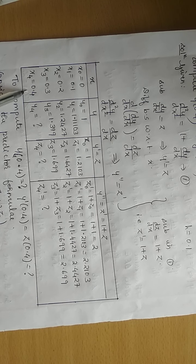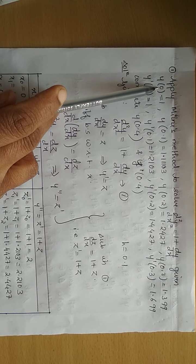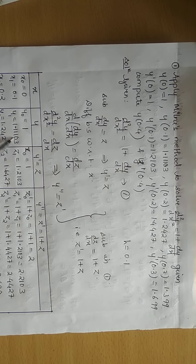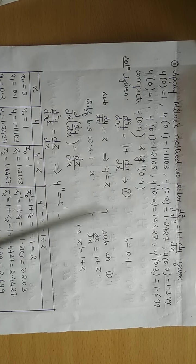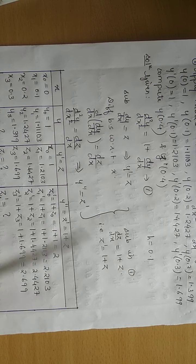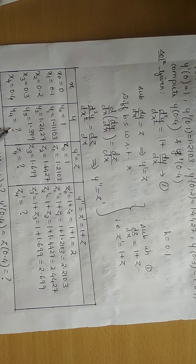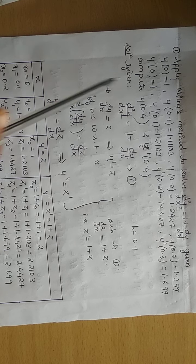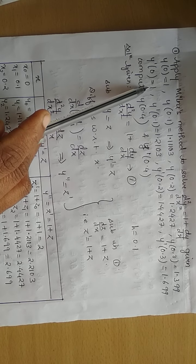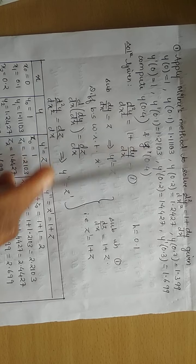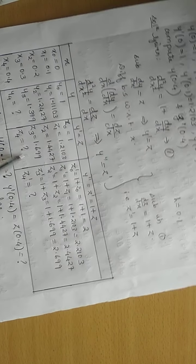The value to be computed is at x₄ = 0.4. From the given conditions: when x₀ = 0, y₀ = 1; when x₁ = 0.1, y₁ = 1.1103; when x₂ = 0.2, y₂ = 1.2427; when x₃ = 0.3, y₃ = 1.399; y₄ is unknown and needs to be computed. Similarly, z₀ = 1, z₁, z₂, z₃ are given, and z₄ needs to be computed.